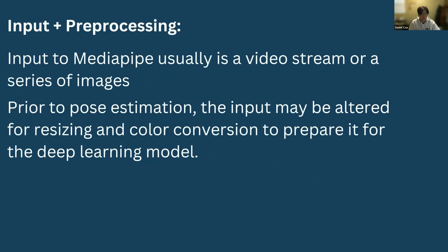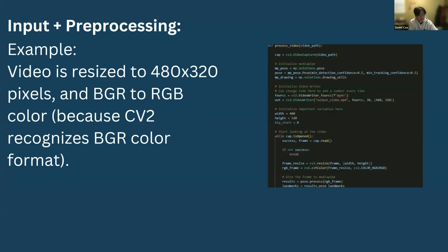And let's look at it in a little more detail. So the input and preprocessing part, the input to MediaPipe is typically sourced from a diverse range of sources. This could be a continuous video stream or a collection of individual images. And this input stream serves as the material which MediaPipe's algorithms are applied to, which enables it to perform a bunch of different tasks. And prior to pose estimation as well, input also needs to be altered for resizing and color conversion to make it consistent and prepare it for the deep learning model. And for example, from the code to the right, I had to resize the input video to 480 by 320. That was just simply for the program to run faster. And we had to do a BGR to RGB color conversion as CV2, the thing that we're using to read the video, only recognizes a BGR color format.